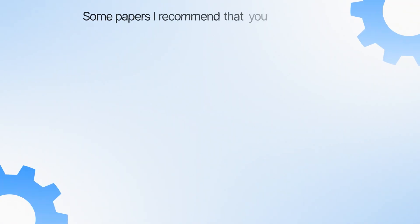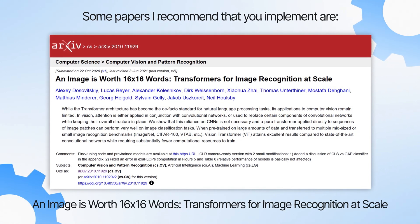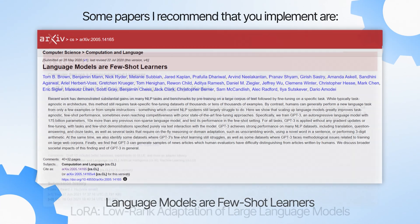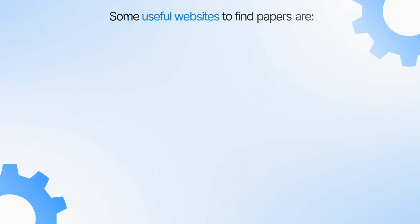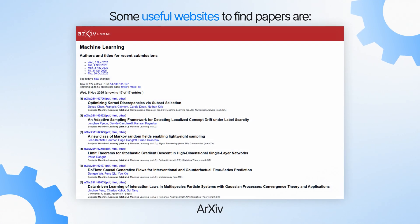Some papers I recommend you implement are 'Attention Is All You Need,' 'An Image Is Worth 16x16 Words: Transformers for Image Recognition at Scale,' 'Language Models Are Few-Shot Learners,' and 'LoRA: Low-Rank Adaptation of Large Language Models.' These are mainly in deep learning and AI, but you can find papers on many websites covering topics that interest you. Some useful websites are Trending Papers on Hugging Face, ML Papers of the Week, and arXiv.